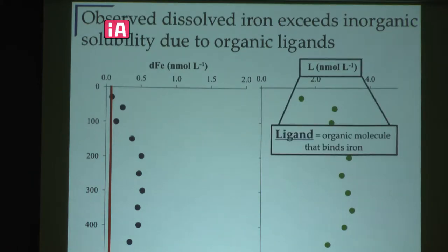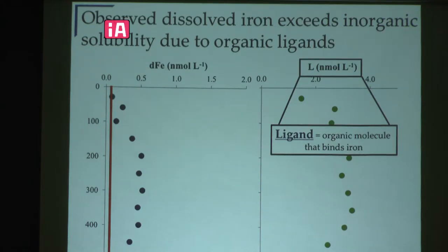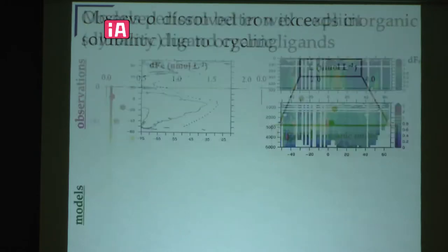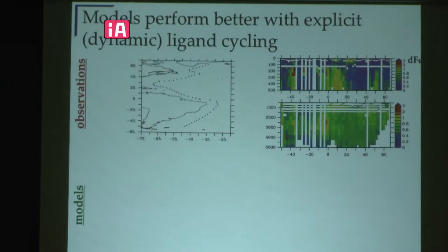I'm going to talk a lot about ligands today, specifically siderophores, which are a type of ligand. A ligand is just an organic molecule that binds iron. These ligands are generally in much higher concentrations than dissolved iron in seawater and are what's enhancing its solubility. To understand dissolved iron cycling we have to understand what's going on with these organic ligands.